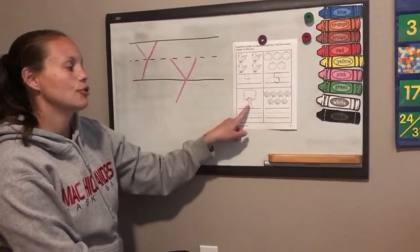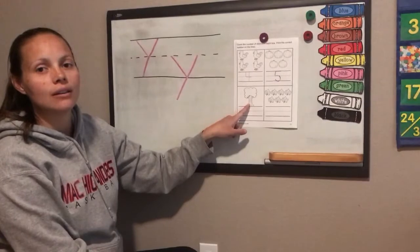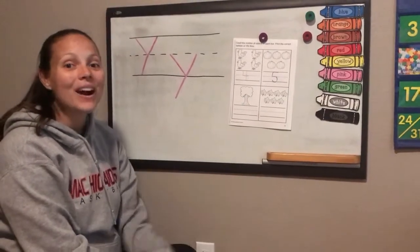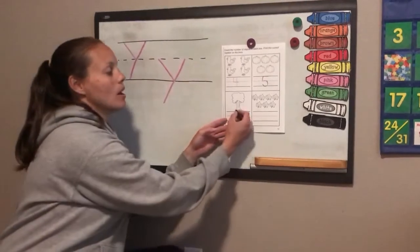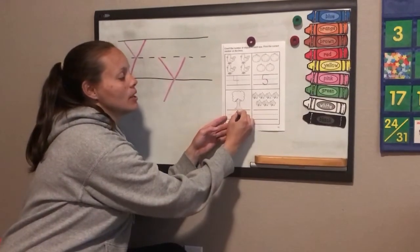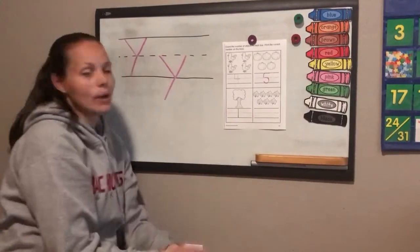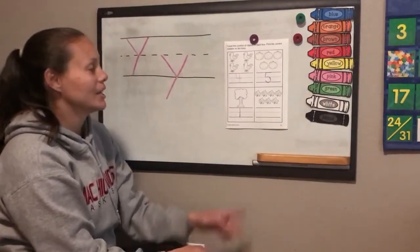Now let's count our trees. How many trees do you see? One, just one. I think you all know how to write a one pretty well. Let's go ahead and write our one. We start all the way at the top and touch all the way to the bottom. Very good.